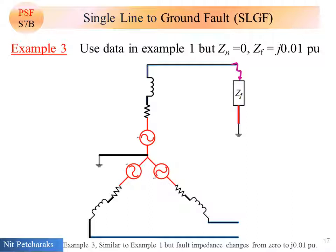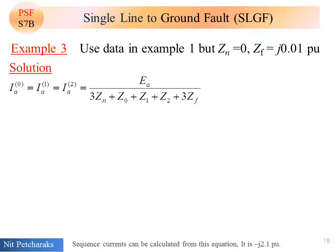Example 3, similar to example 1, but fault impedance changes from 0 to J 0.01 per unit. Sequence currents can be calculated from this equation.